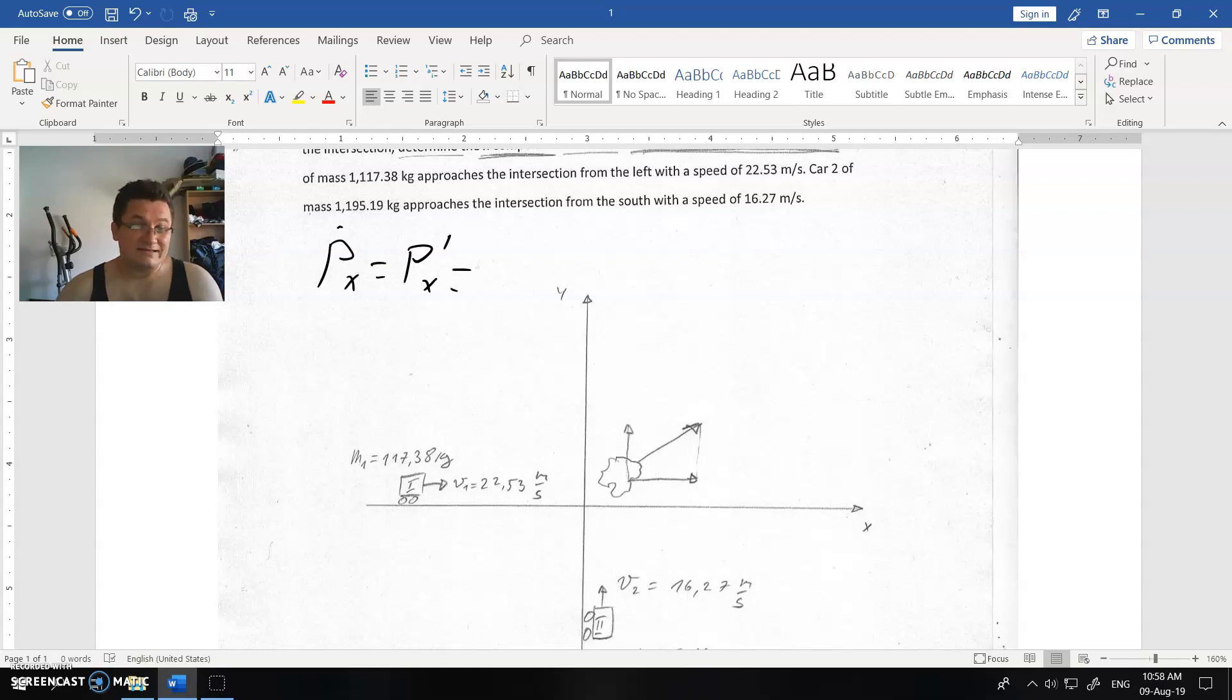These two things multiplied - that equals 117 times 38 kilograms times 22.53 meters per second. And you will get 2644.